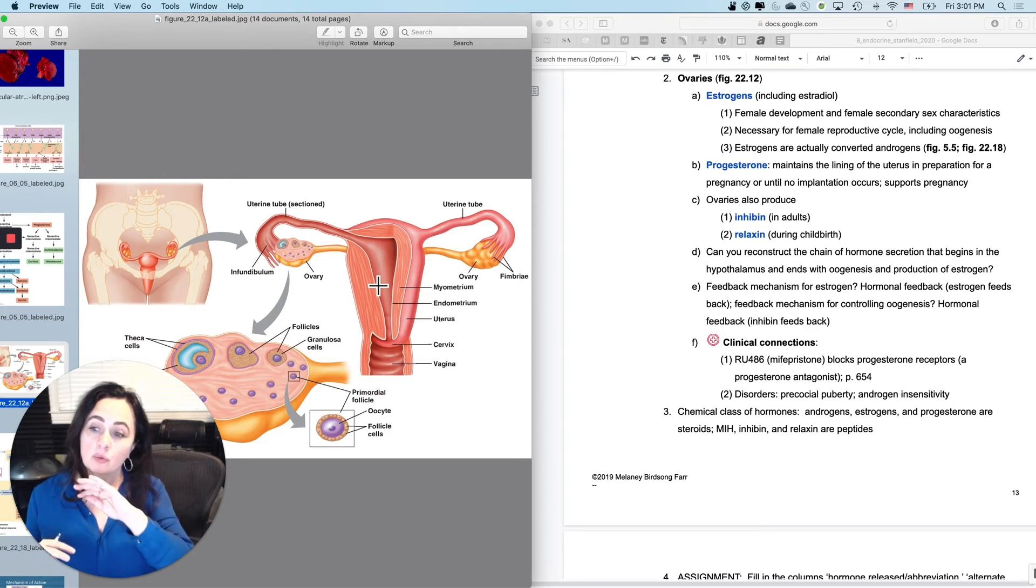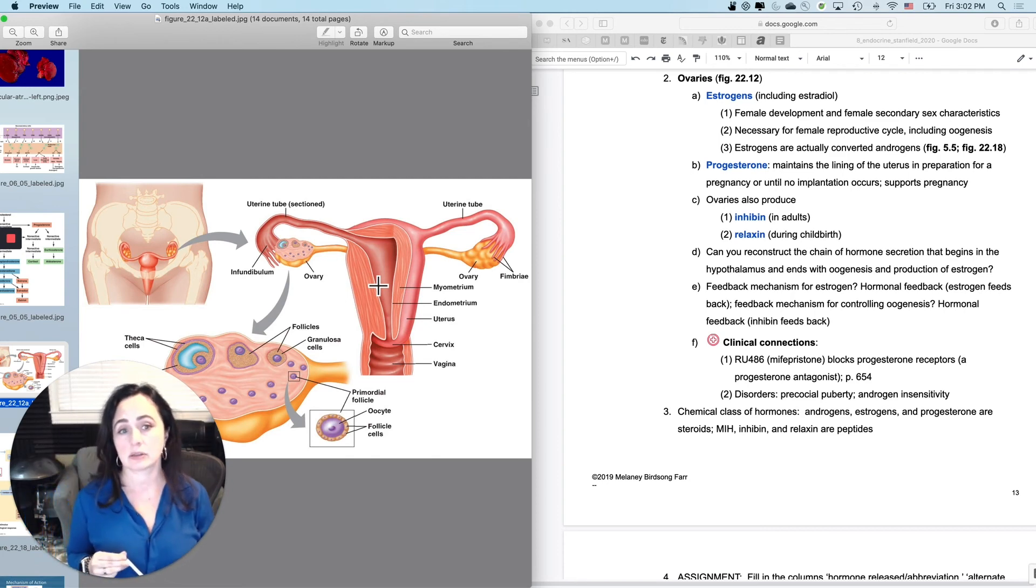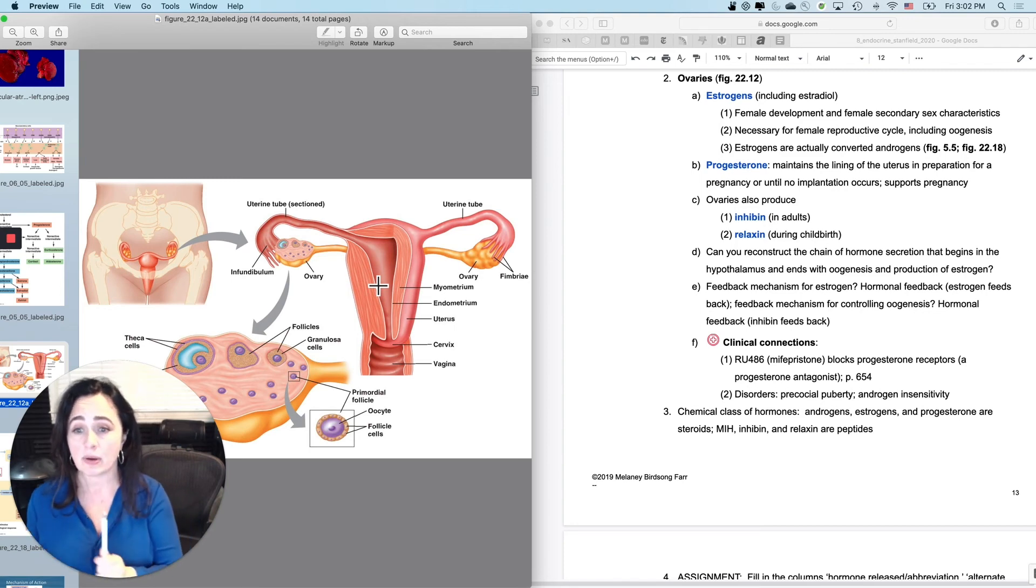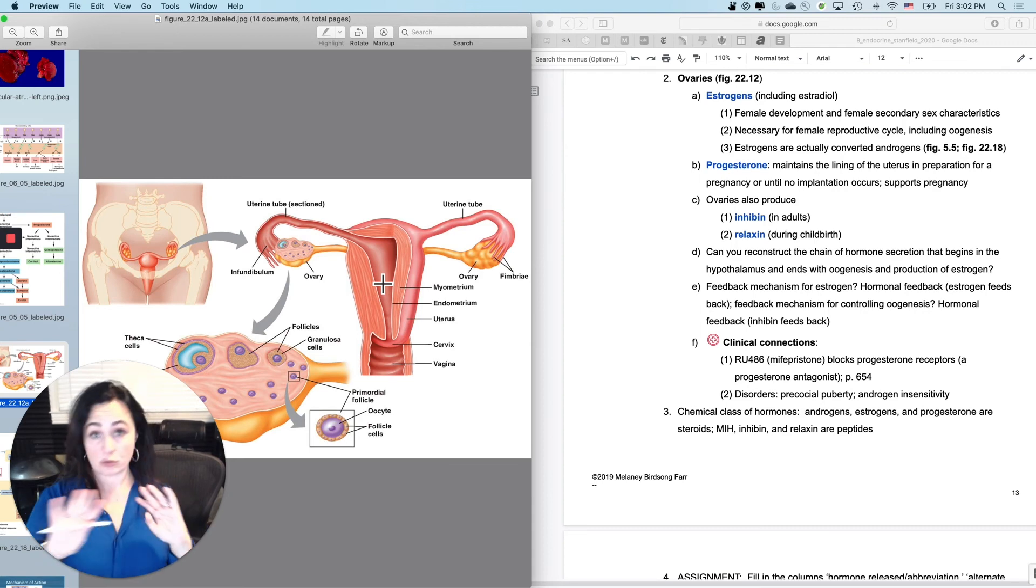The progesterone level stays high and the uterine lining stays thick for a window around ovulation. Then after you get out of that window and implantation, which is how pregnancy is defined, has not occurred, then the progesterone level's going to drop. That's what causes menstruation. Progesterone level goes up, says maybe we're going to get an implantation and a pregnancy, and then it doesn't implant. Then the progesterone level drops, and then you menstruate, and then you do the whole thing over again during the next cycle. That's progesterone's job, it's progestation. If, however, an implantation did occur, your progesterone level would stay high throughout the entire pregnancy. If it was a normal, typical, healthy pregnancy, progesterone level stays high the whole time supporting the pregnancy.